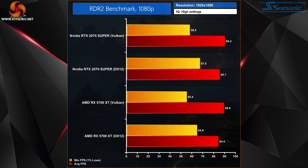Looking at the built-in benchmark at 1080p, there is a small delta between average frame rates across the two APIs. The RTX 2070 Super saw five percent higher average frame rates with Vulkan, while the 5700 XT saw six percent higher average frame rates with Vulkan over DX12. However, far more significant is the one percent lows — the 2070 Super improved by 16 percent and the 5700 XT by 17 percent when using DX12, providing a noticeably smoother gaming experience.